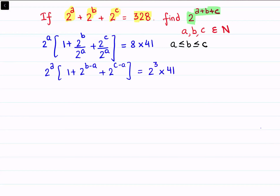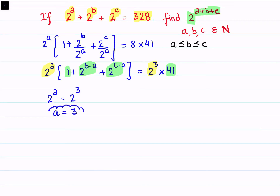Here 2^a is even and 2^3 is even. The full term in brackets — 1 plus even plus even — is odd, and on the RHS, 41 is odd. Comparing the even parts: 2^a equals 2^3, and since the bases are the same, the powers are equal, giving us a equals 3.